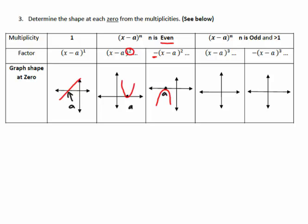The direction of the turn is determined by the positive or negative in front. For a multiplicity of 3 with a positive leading term, the graph comes down much like a parabolic shape, but instead of bouncing, it forms the other side of the parabola — it goes through that a value. If the term is negative, the graph starts down, comes up to the a value, and continues through. The key difference: even multiplicity gives a bounce; odd multiplicity passes through, forming that S-like shape.